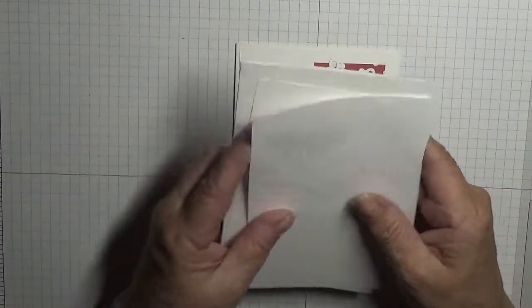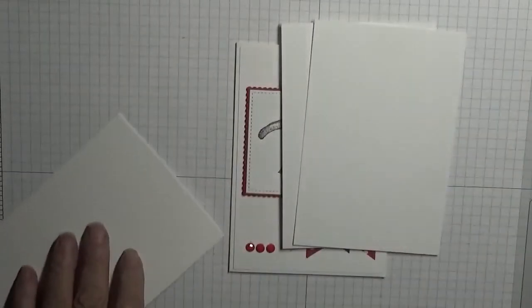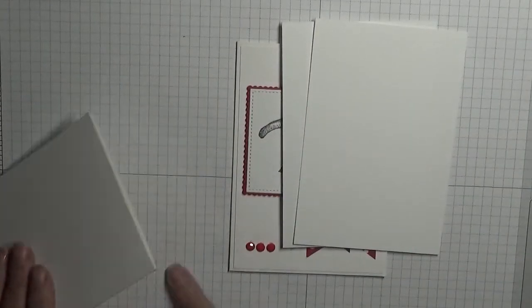To make this card I used a card base of eight and a quarter by five and seven eighths, scored at four and one eighth, folded in half and burnished. Let's do that now.